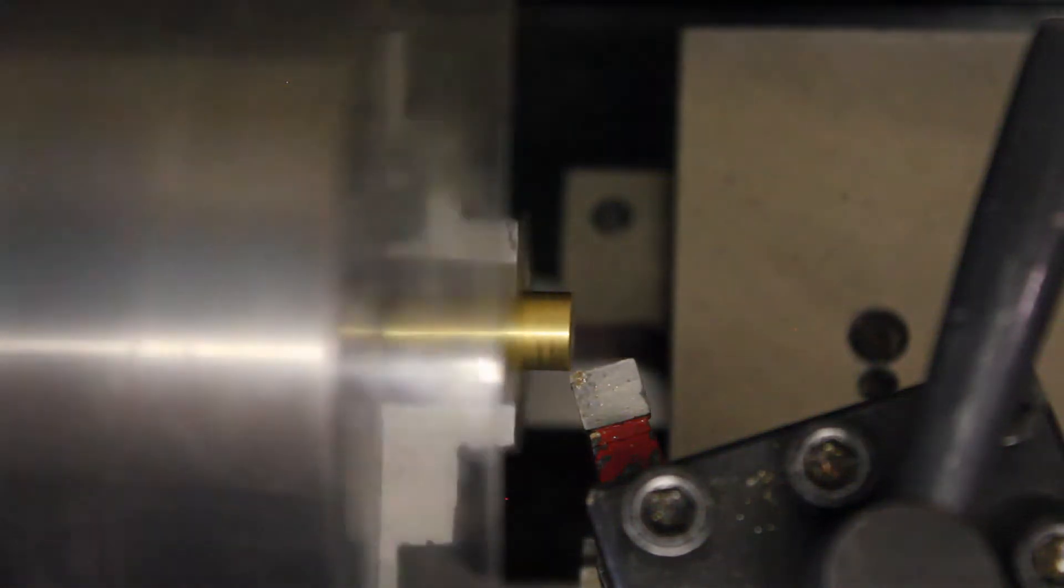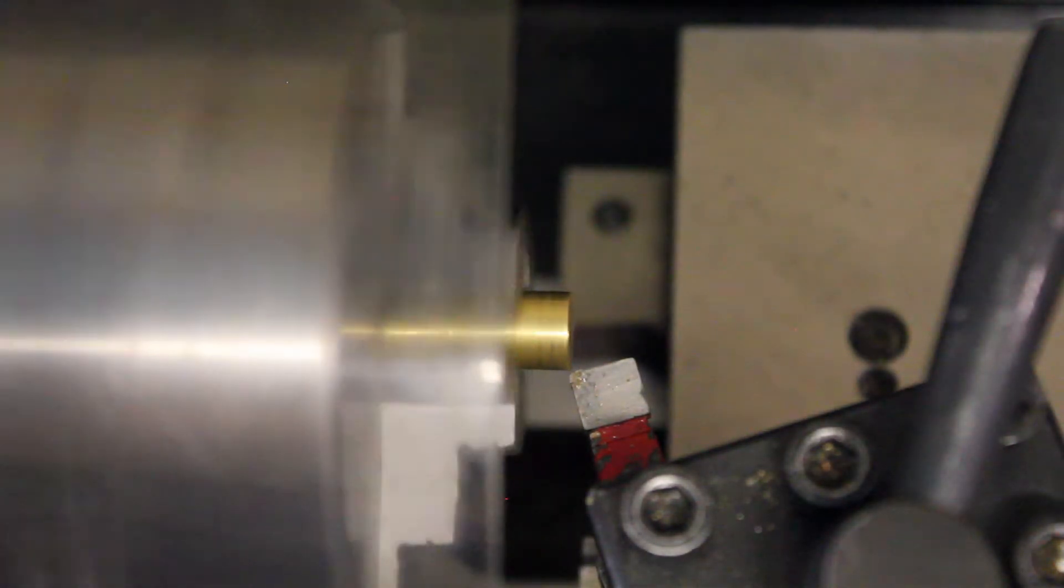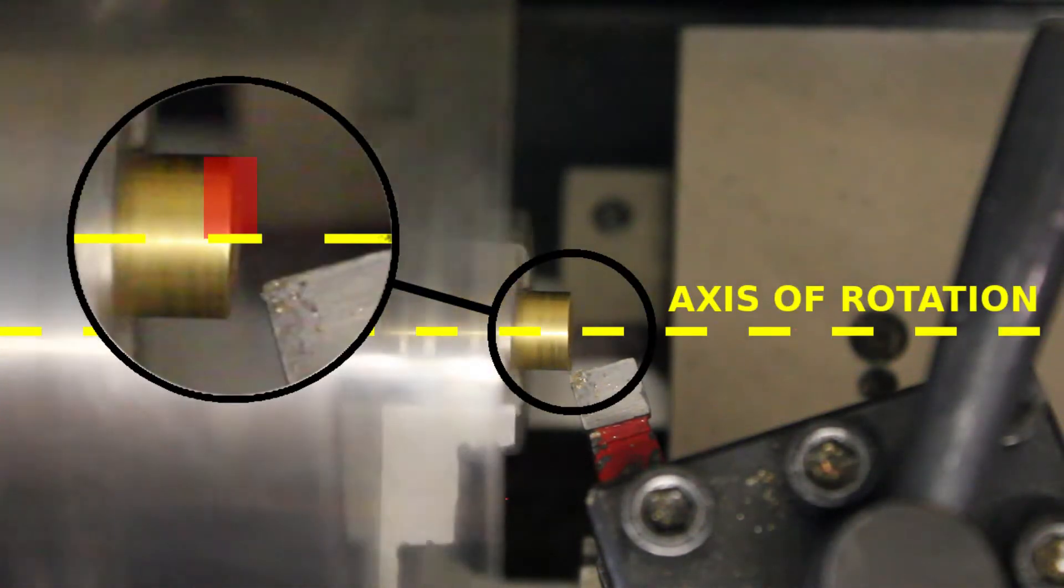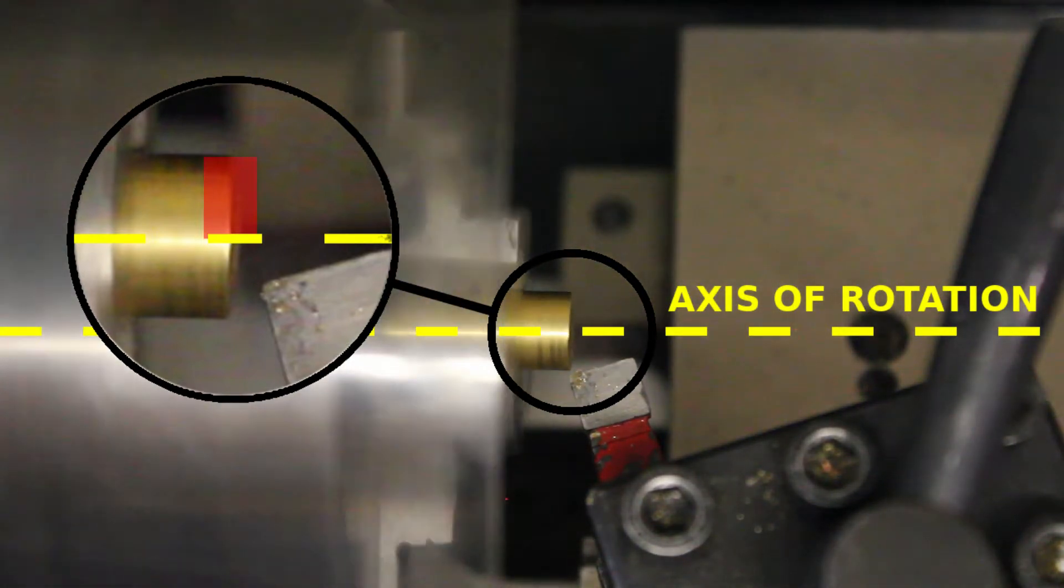Now you only need to go halfway, you only need to go up to the axis of rotation. If you start cutting on the other side, it won't cut because it would be like you're spinning it in reverse.